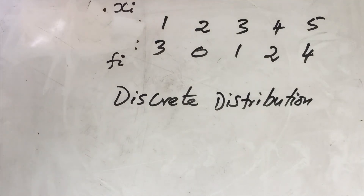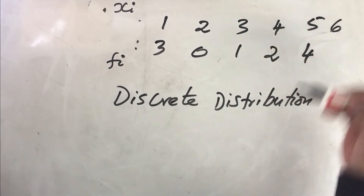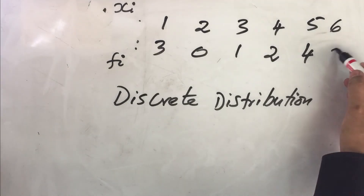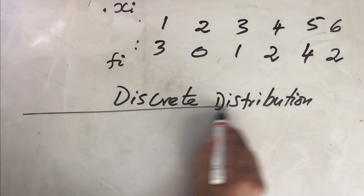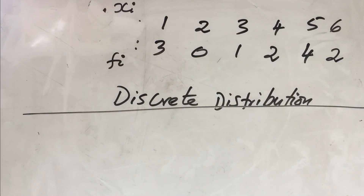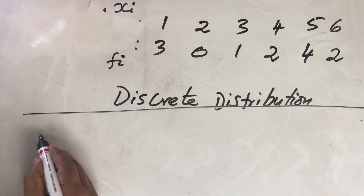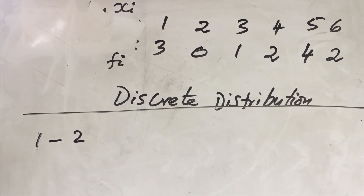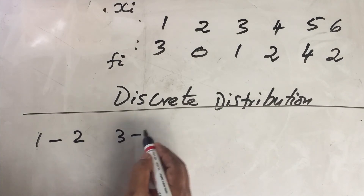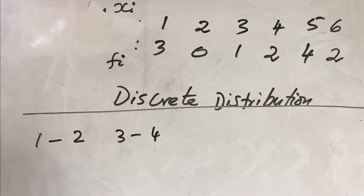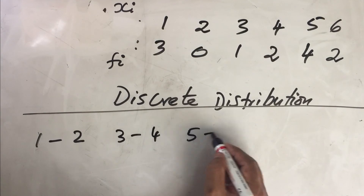The third kind of data arrangement uses class intervals. Assume some students collected six chocolates. Instead of listing each value, we group them: how many collected between one to two chocolates, how many between three to four, and how many between five to six chocolates.